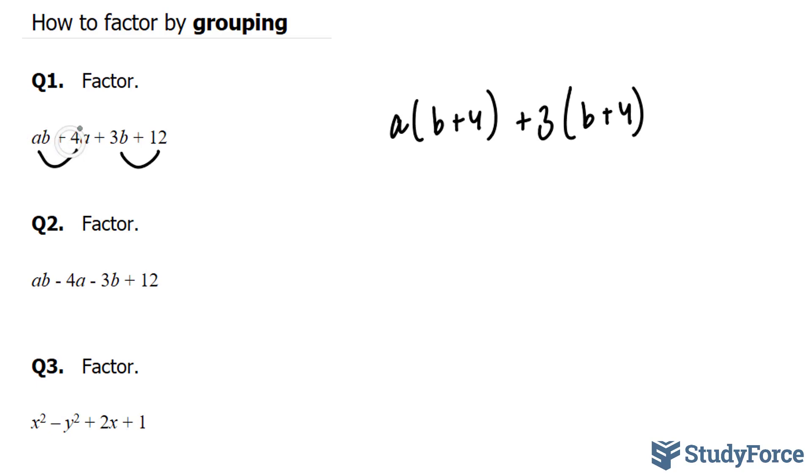So we've gone from four terms down to two terms. You'll notice something special about this expression? Both of these two terms remaining have a B plus 4 that's common. So I can factor out a B plus 4, leaving me with A plus 3. And that expression right there is the final answer.